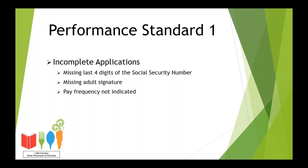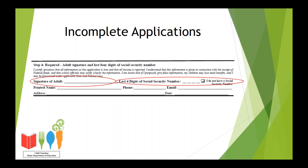The common finding we are going to talk about in this area is incomplete applications. We often find that applications that have been approved are actually incomplete. The problem areas with applications include missing adult signature, missing the last four digits of the social security number, or indication of no social security number. Here we have step four of our meal benefit applications. This is where the adult signature needs to be, and this is required on all applications that you receive. The next section circled is the last four digits of the social security number. This is required on all applications except for SNAP, TANF, or Foster. Any other application must have the last four digits of that social security number or indication that they do not have one.